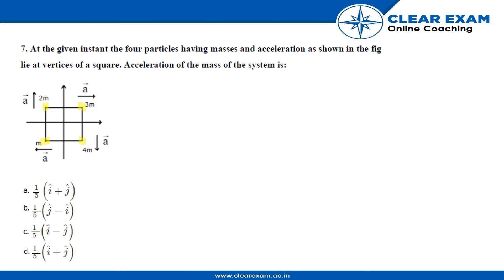Particle 3 has mass 4m and acceleration a in negative j cap, and this last fourth particle has mass m and acceleration a in minus i cap direction.